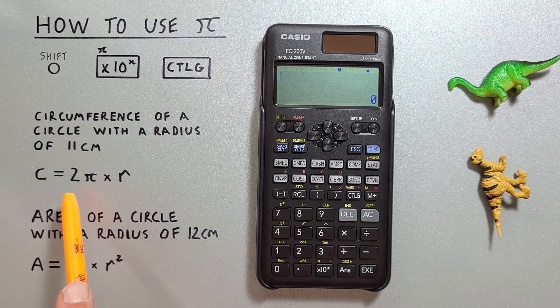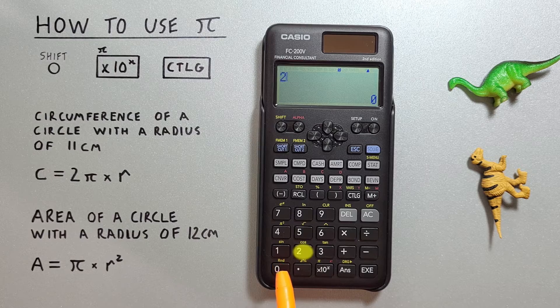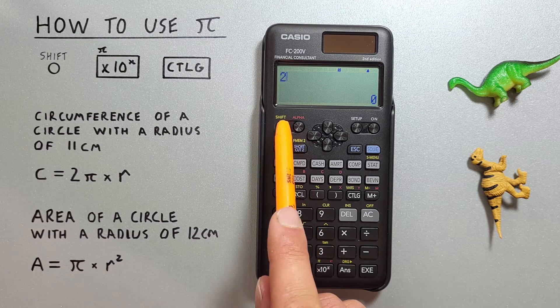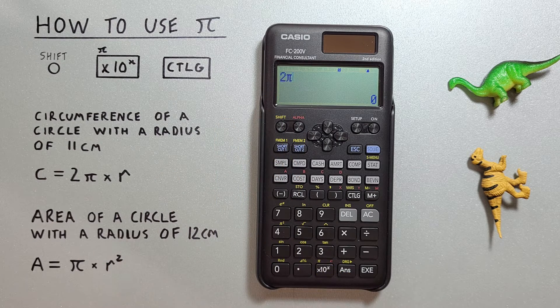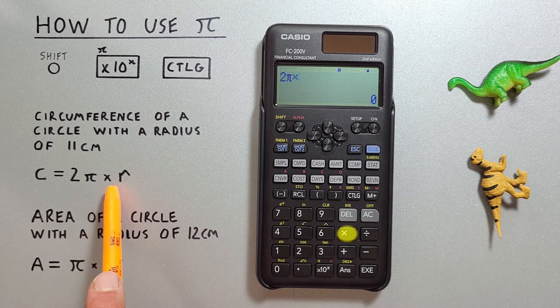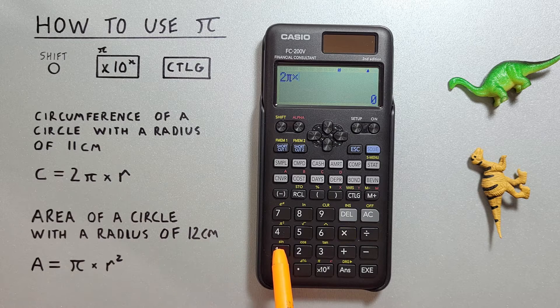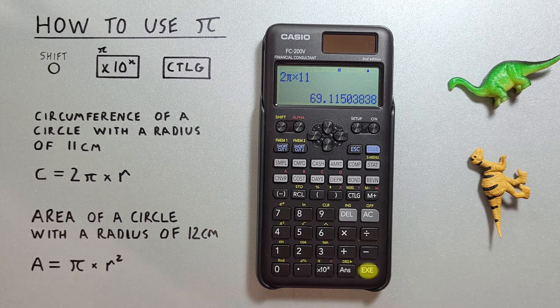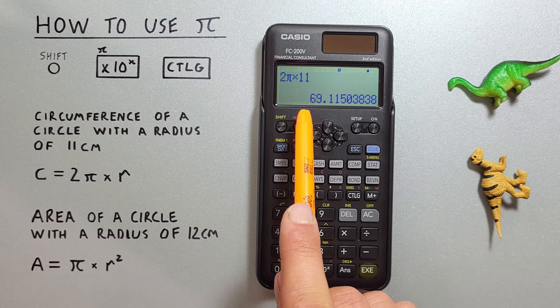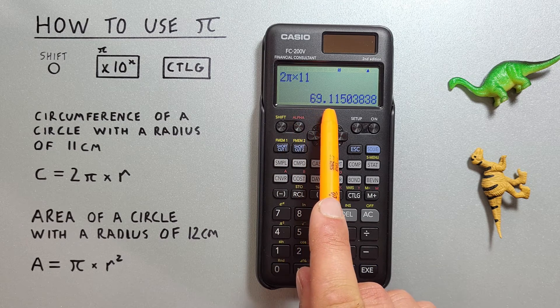So we can go ahead and enter the 2, and then use our shortcut to get Pi with shift times 10 to the x, times our radius of 11, and hit exe, and we get a circumference of 69.115 etc.